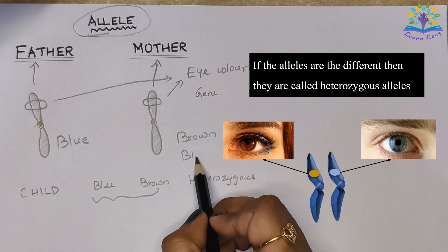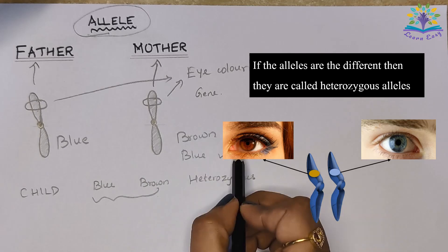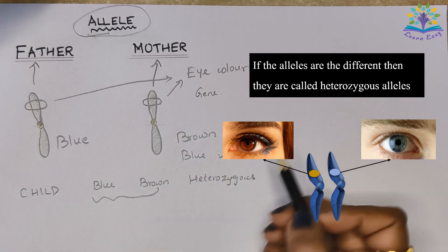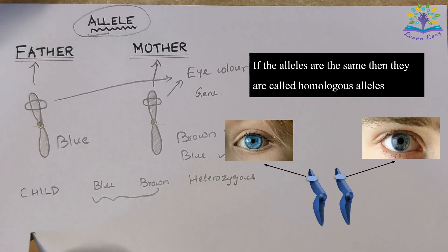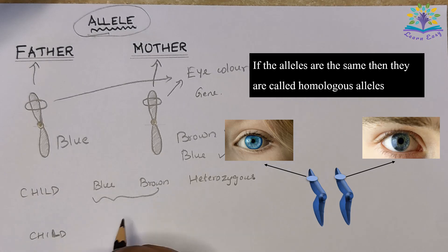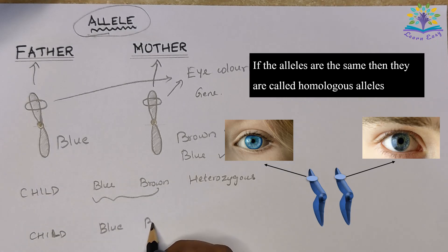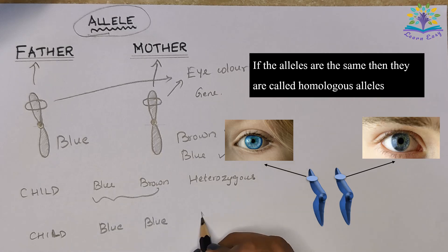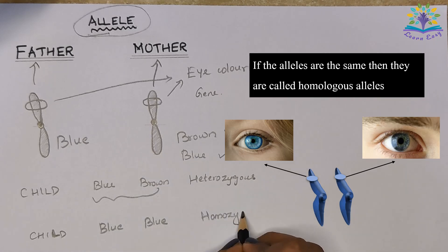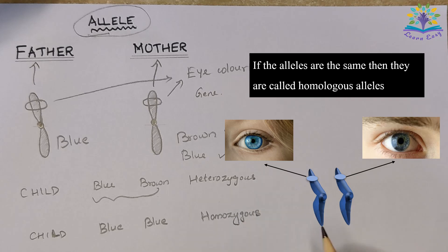If the alleles are the same, then they are called homozygous alleles. For example, if both mother and father have blue eyes and this feature is passed on, then the alleles present in the zygote will be the same.